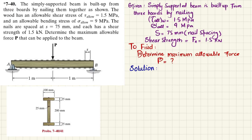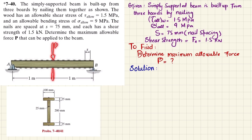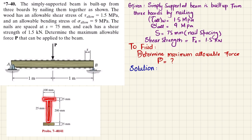Welcome back. Problem 7-40 statement: the simply supported beam is built up from three boards by nailing them together. The wood has allowable shear stress 1.5 MPa and allowable bending stress 9 MPa. The nails are spaced at s = 75 mm and each has a shear strength of 1.5 kN. Determine the maximum allowable force P that can be applied to the beam. The beam has a pin support at point A and a roller support at point B, acted upon by a concentrated load P at the mid-span. The length is 2 meters, made up of three boards forming an I-beam.